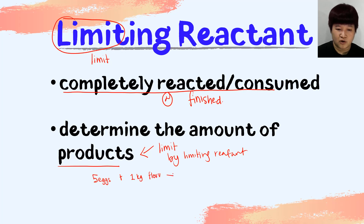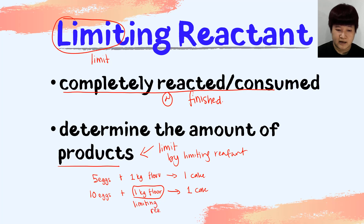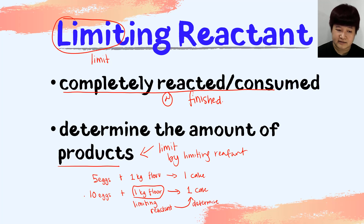For example, if I have five eggs and one kg of flour to produce one cake, that is my recipe. What happens if I have 10 eggs and one kg of flour? Based on the recipe, I will still have one cake. Why? Because the flour is only one kg, so the flour is now your limiting reactant. The 10 eggs — the extra — we name the egg the excess reactant.